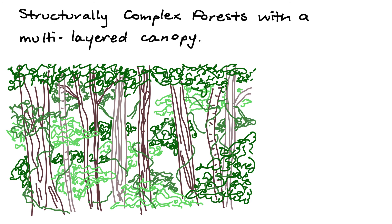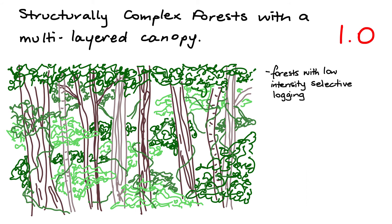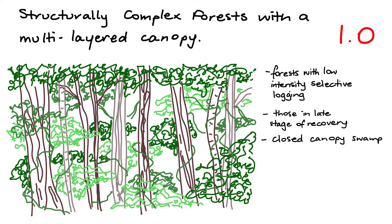Category 1: Structurally complex forests with a multi-layered canopy, with a coefficient of 1.0. These include forests with low-intensity selective logging and/or those that are at a late state of recovery after long-rotation shifting agriculture, closed canopy swamp, mangrove and peatland forests with no signs of drainage.